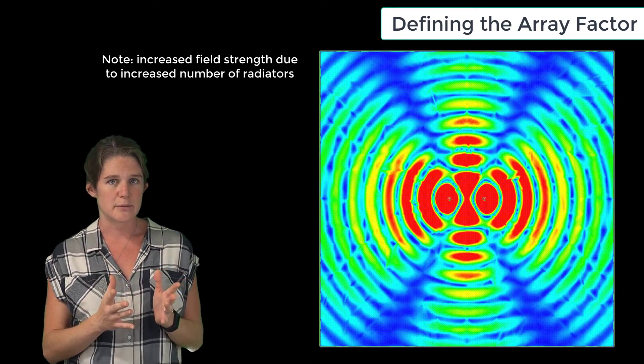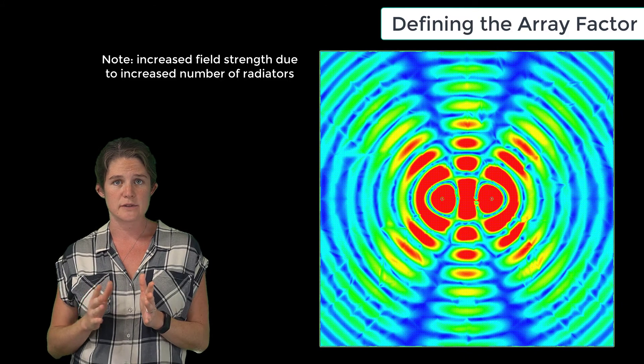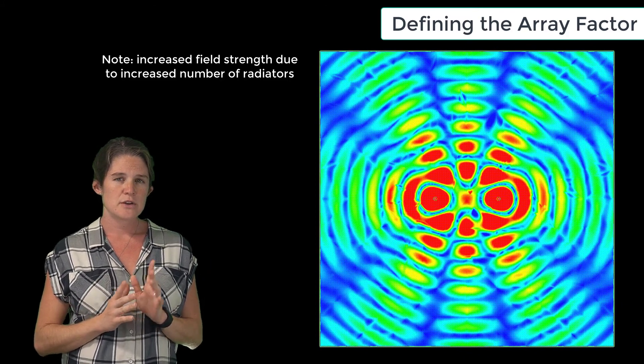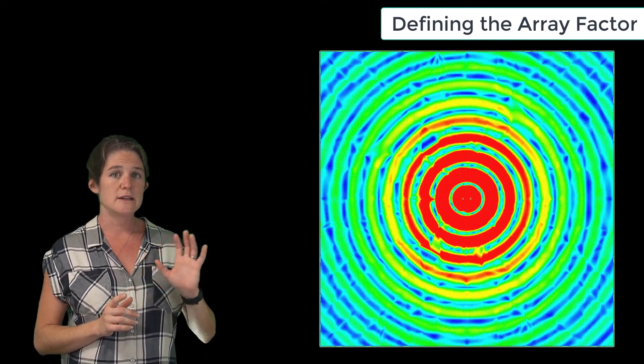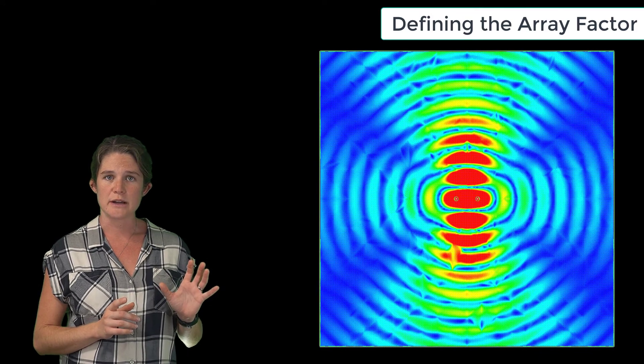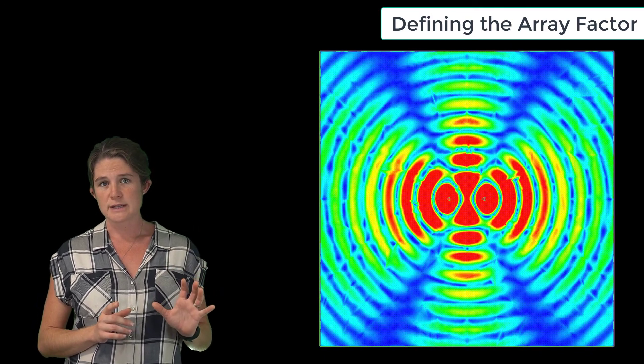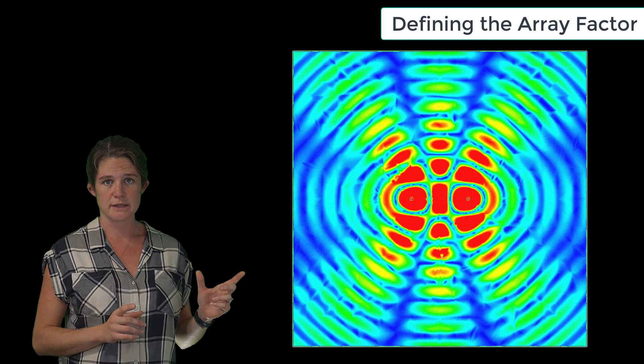But here's how that radiation pattern changes as the elements move apart, going from one-tenth of a wavelength of separation up to two wavelengths of separation. You can see that the constructive and destructive interference between the two elements significantly affects the net radiation from this collection of two elements.